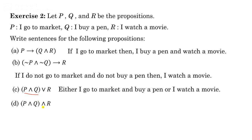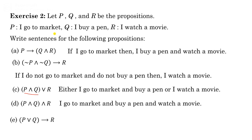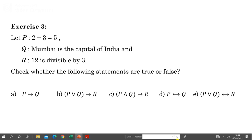Next: (P OR Q) implies R. Here P OR Q is the conditional part: 'If I go to market or buy a pen, then I watch a movie.' This completes Exercise 2, and we now move to Exercise 3.